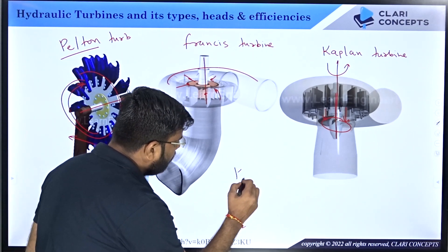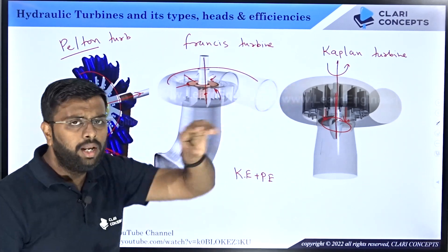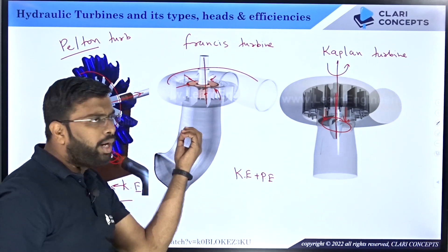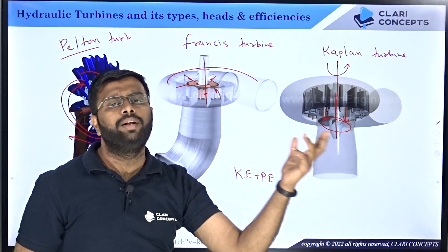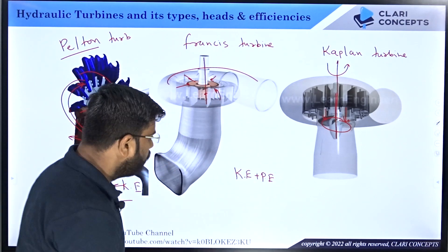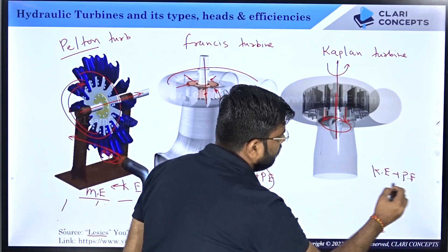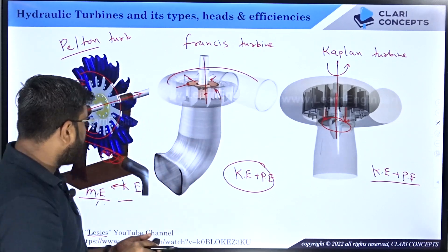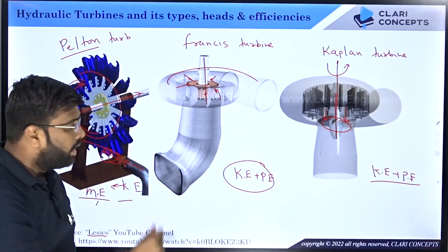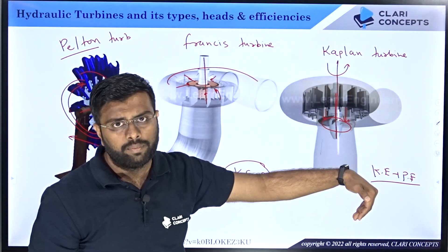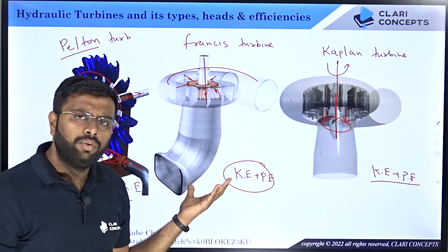The Francis turbine uses both kinetic energy plus pressure energy. When water comes to the inlet, both pressure and kinetic energy are present, and the turbine extracts both to drive the generator. Similarly, Kaplan also uses both kinetic energy plus pressure energy. For Pelton, flow rate is relatively small but head is high. For Kaplan, flow rate is high but head is low — so for low head dams you use Kaplan. Francis is used for medium head and medium flow rate operations.